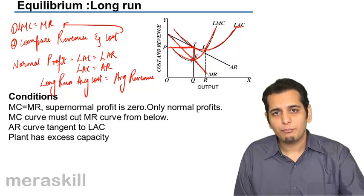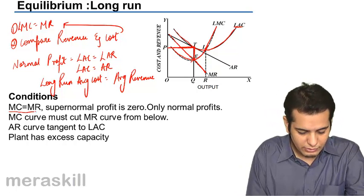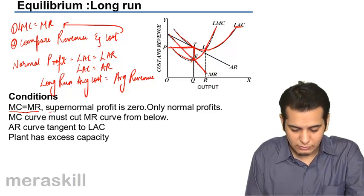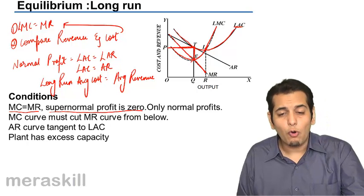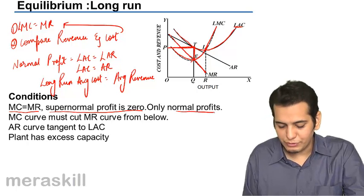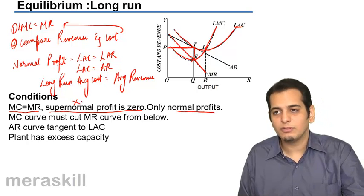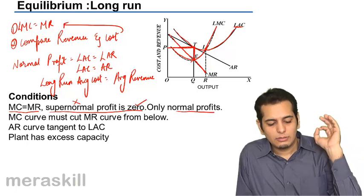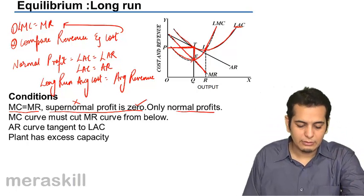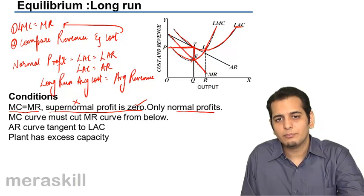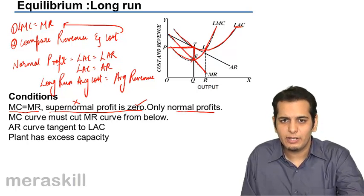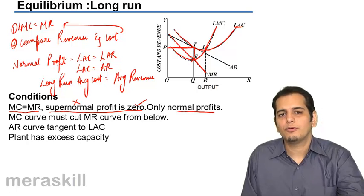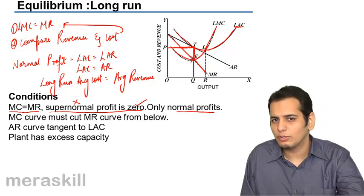Now please note these important conditions. First, MC should be equal to MR in the long run. Thus a firm will always have normal profits only. It can't have supernormal profits. Supernormal profits will always be zero, because at all the points where there is equilibrium and AC equals AR, there you have only normal profits. Supernormal profits can't exist when average cost is equal to average revenue.